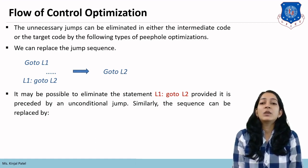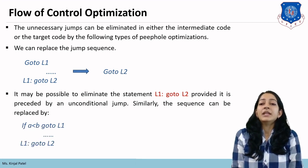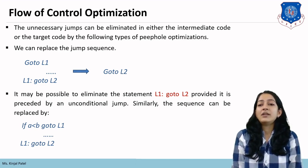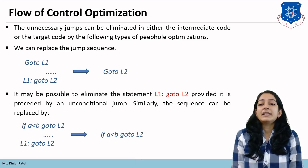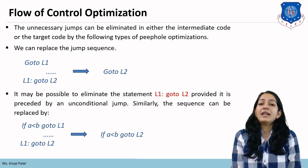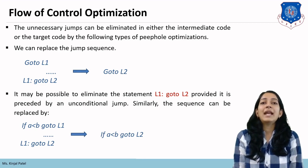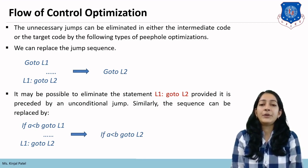Similarly, this sequence can be replaced: for example, 'if a < b then goto L1' and L1 says 'goto L2'. We can directly say 'if a < b then goto L2'. We need not jump toward L1 and then L2; we can directly jump toward L2.